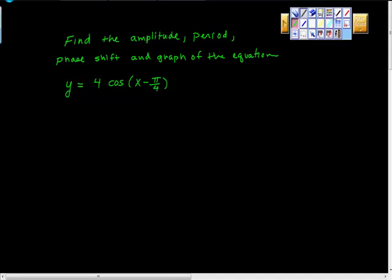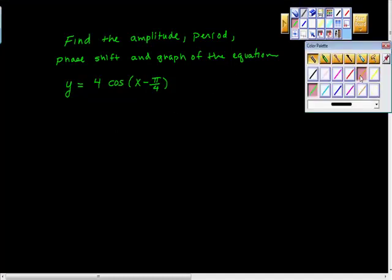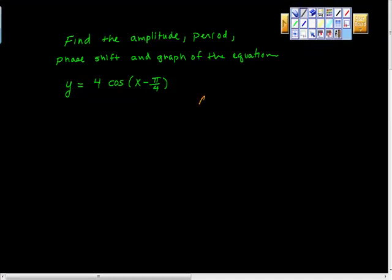So let's start with the amplitude. How do you find amplitude? Amplitude equals absolute A, which is the absolute value of 4, which is equal to 4. So that's what that will look like on the test.